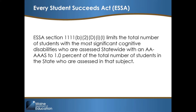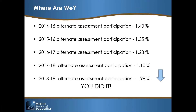Where are we? Well, congratulations folks — you did it! Beginning in 2014-15, Maine has reduced the number of students participating in alternate assessment by one-tenth of a percent. Maine currently is at 0.98% participation — just barely under the 1% — and our job now is to continue to use participation guidelines and keep our participation below the 1%.